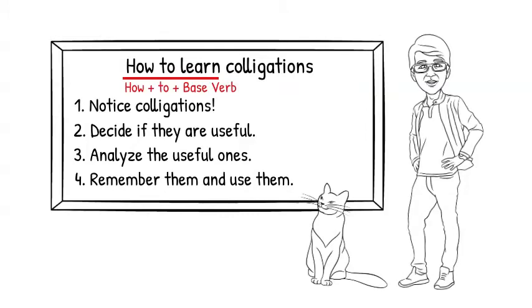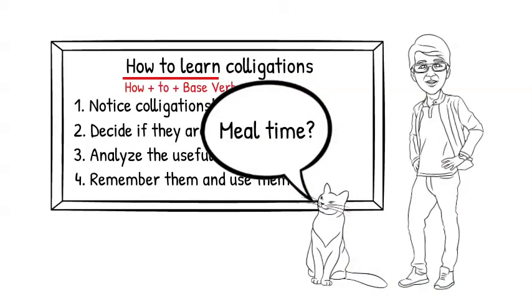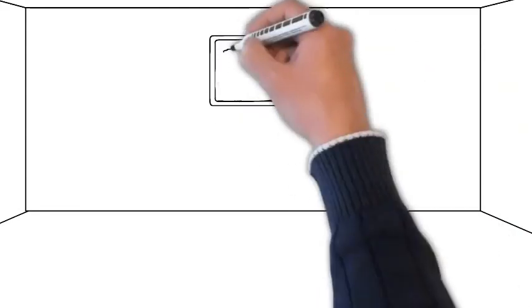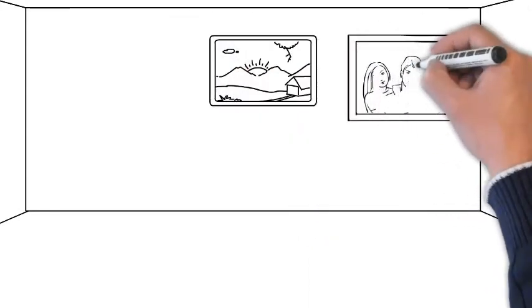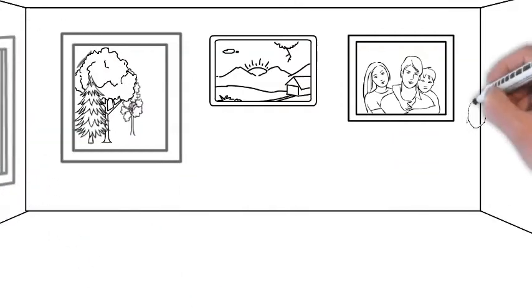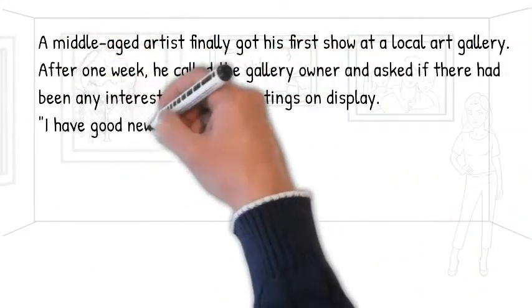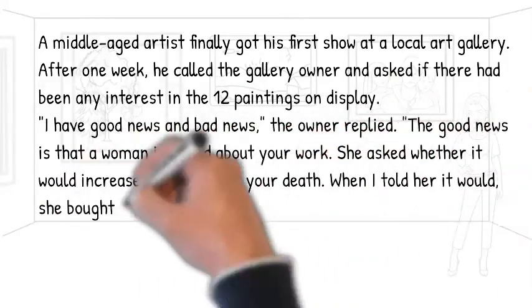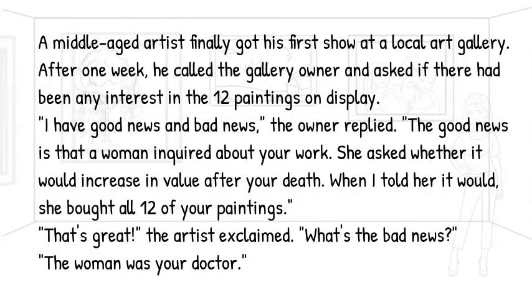Now for something very important. Do you know what time it is? Nope. Sorry. It's joke time. You know, it's very difficult to notice and analyze colligations when you listen. So to get practice noticing colligations, you're going to read a joke instead of listening to it. You should always read the first time just to understand. So read the joke now and don't even think about colligations.